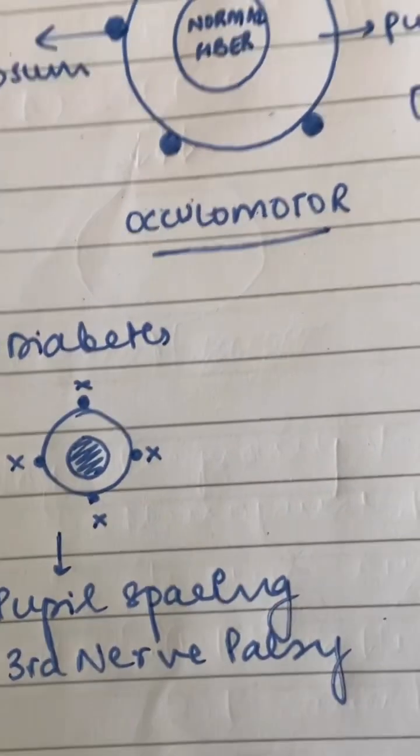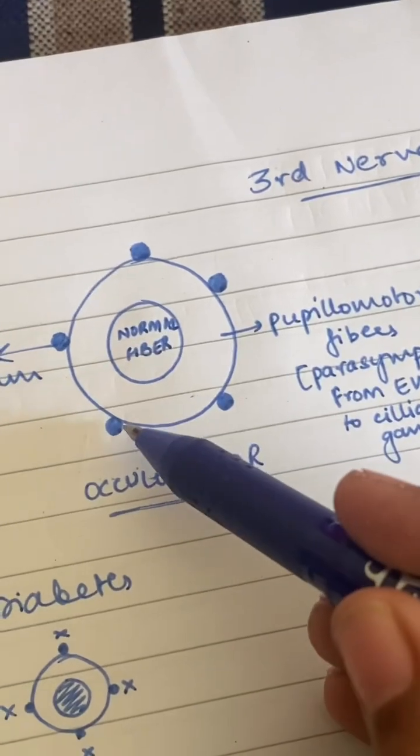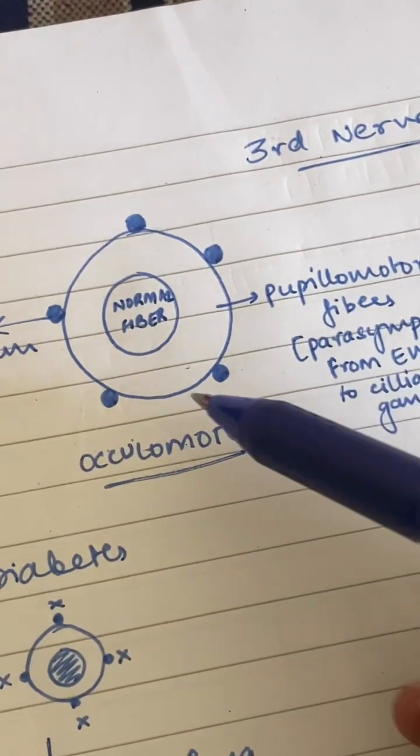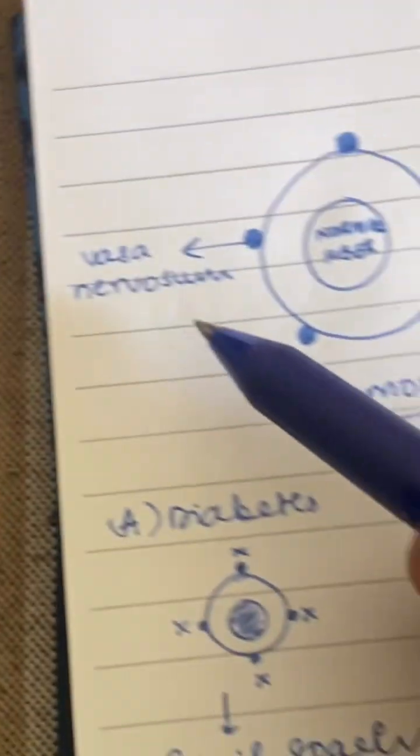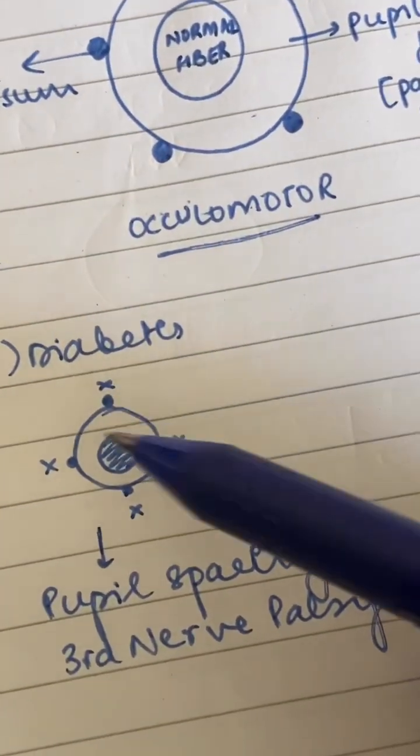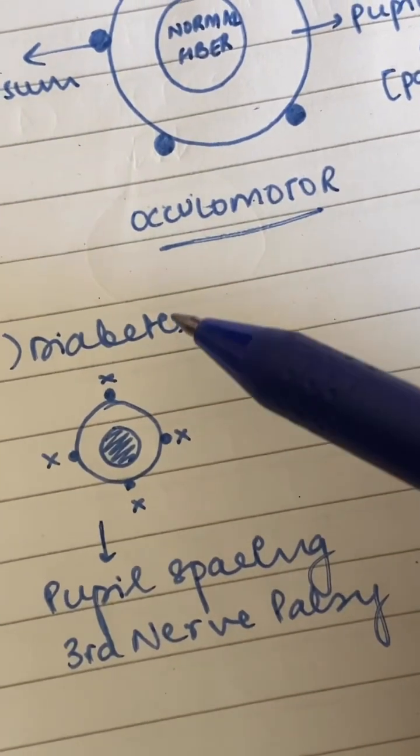is diabetes. So in diabetes, what happens is this: what you're seeing is the blood supply to the nerves, which is known as the vasa nervosum. In diabetes, your vasa nervosum is affected, and that is causing the